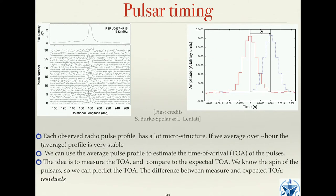Each radio pulse we observe differs in structure due to internal structure of the neutron star and propagation effects. But averaging all pulse profiles gives something extremely stable. This average profile is used to correlate with each individual pulse and estimate the time of arrival — that's the key point. We want to estimate the time of arrival of each pulse.